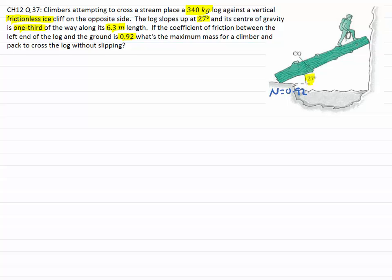The question asks what's the maximum mass of the climber and their pack so that the log doesn't slip or rotate. The log has to remain stationary without accelerating, so this is really a problem on static equilibrium.